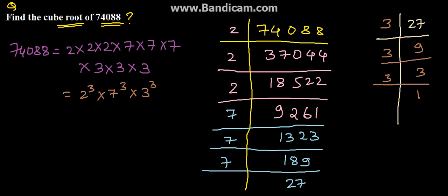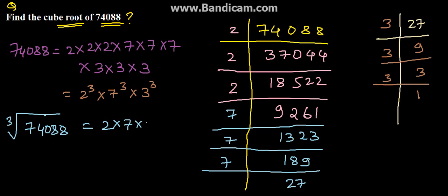Now we need to find the cube root. Therefore, the cube root of 74088 = 2 × 7 × 3 = 42. Therefore, the cube root of 74088 is 42, which is the solution for the given problem.